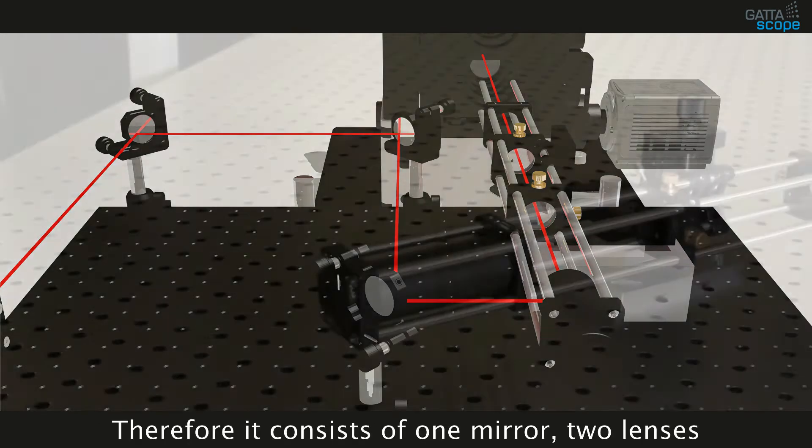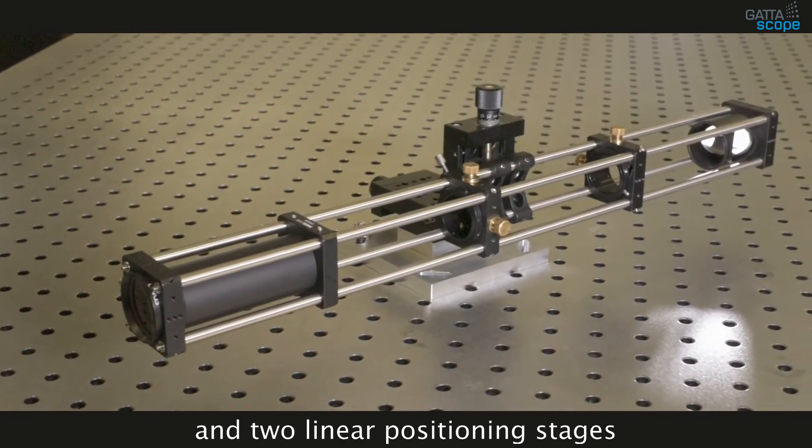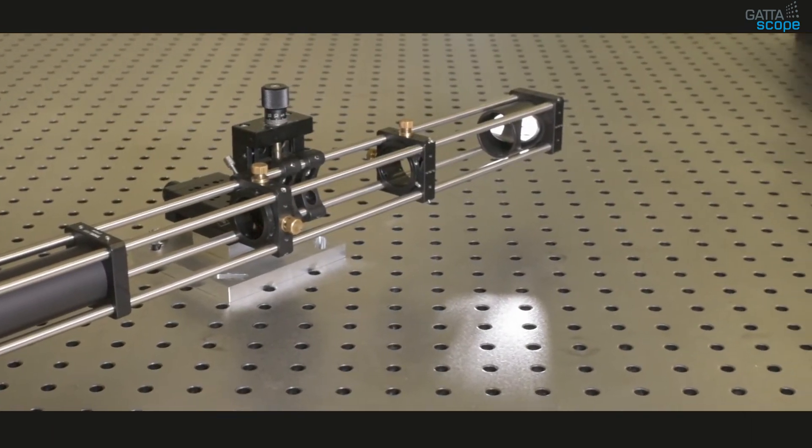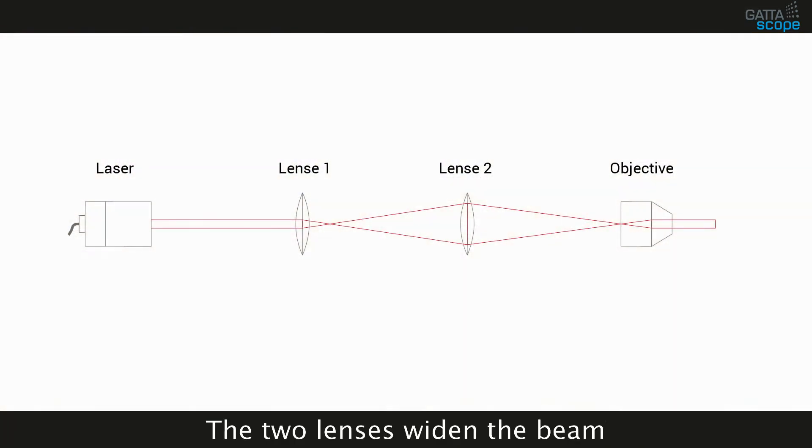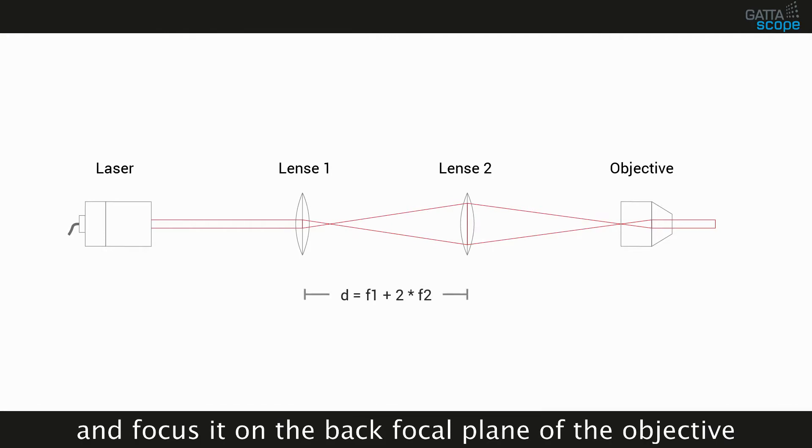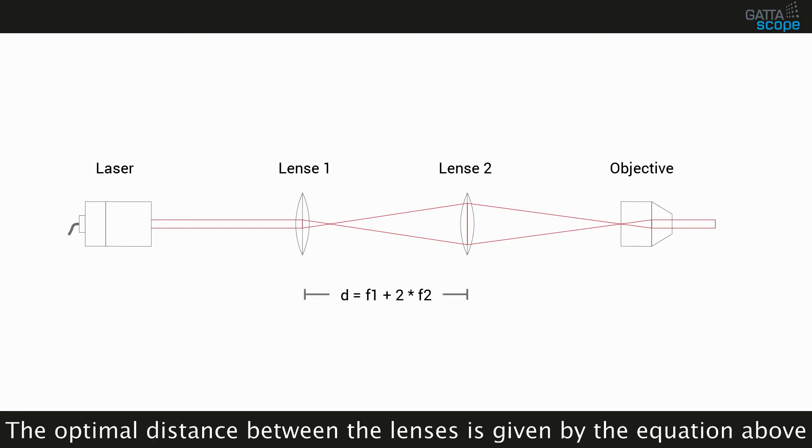Therefore it consists of one mirror, two lenses and two linear positioning stages. The two lenses widen the beam and focus it on the back focal plane of the objective. The optimal distance between the lenses is given by the equation above.